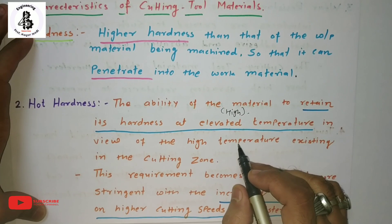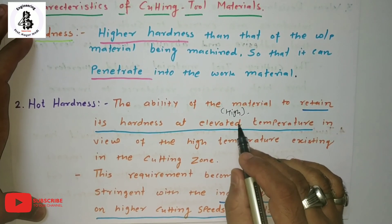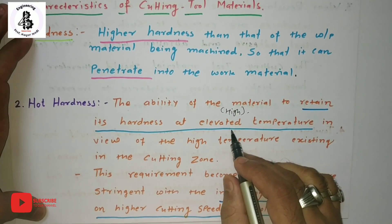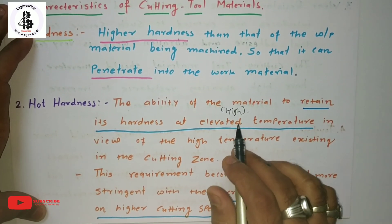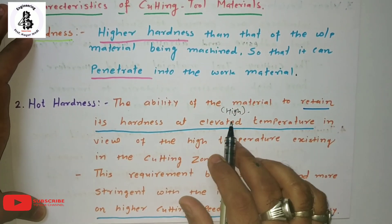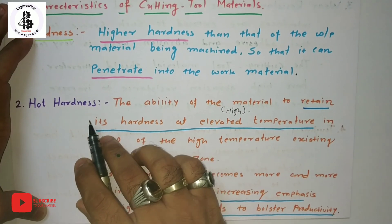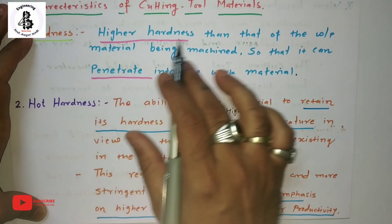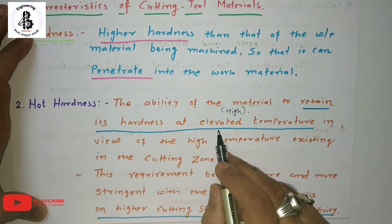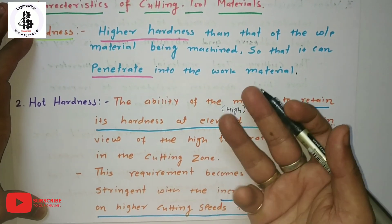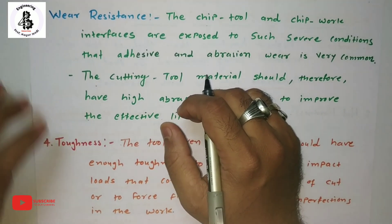Due to friction and wear and tear on the tip of the tool, the tool and workpiece materials reach higher or elevated temperatures. At those temperatures, the material should maintain good hardness — this is called hot hardness. It is present in tool materials and is relevant only at elevated temperatures, not at room temperature.